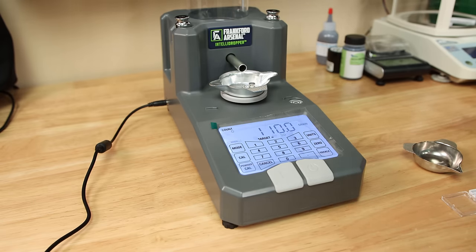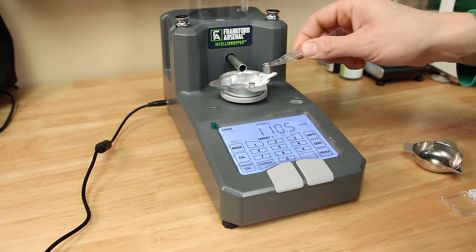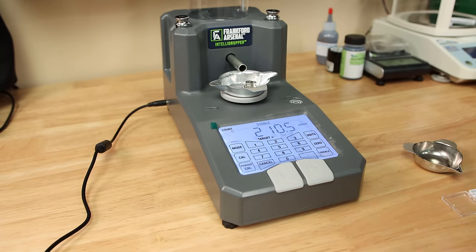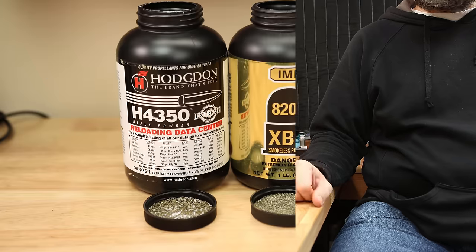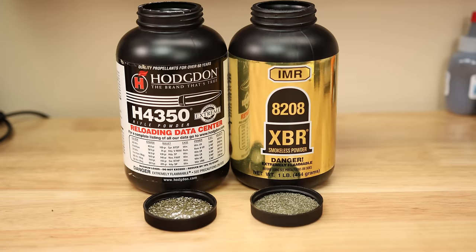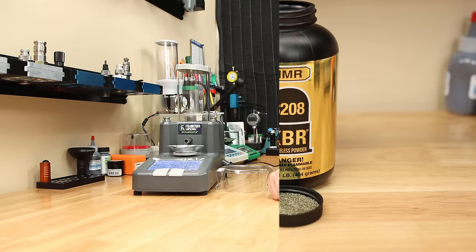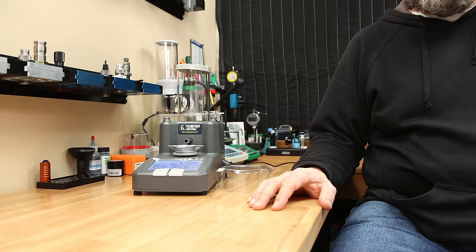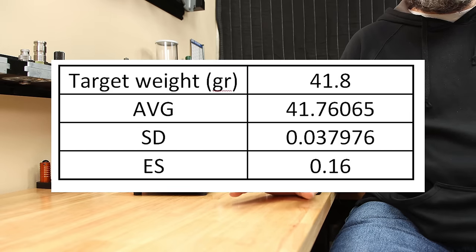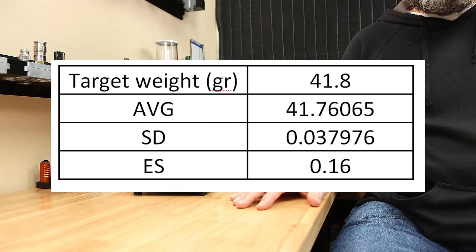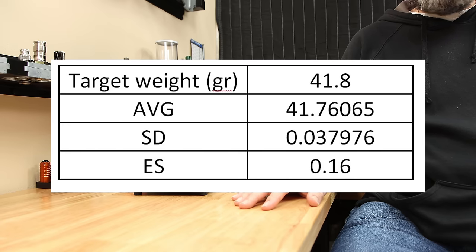Now, I measured the dispensed charges with my FX120i, which can report down to 0.02 grains for comparison. For the data I'm going to give you today, I tried two different powders: the first being 8208 XBR, the other was Hodgdon H4350. With 8208 XBR, my target weight for my charge was 41.8 grains for 62 dispensed charges. The average weight across those 62 charges was 41.76 grains.